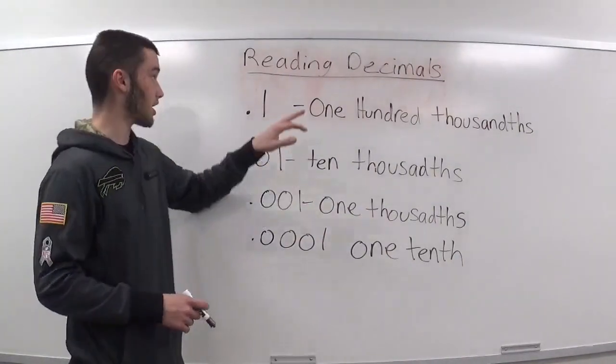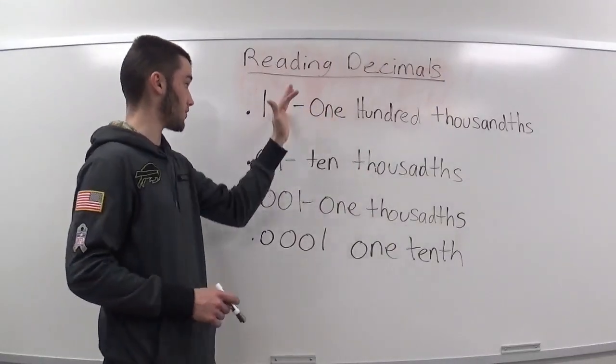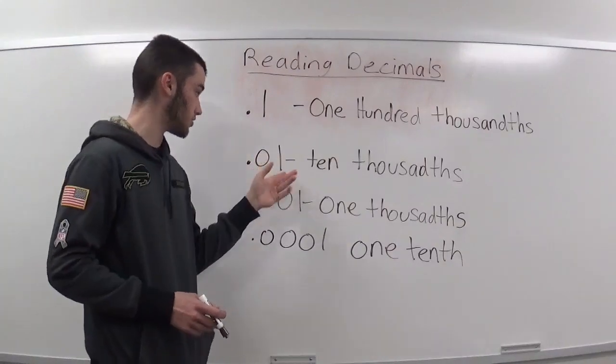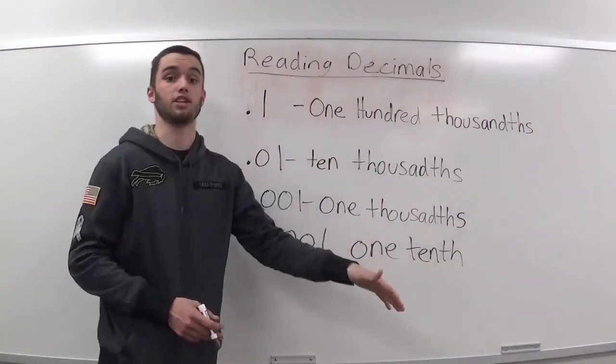Now something I forgot to say is I could put twenty zeros after this .1 and it's still one hundred thousandths of an inch. I could put thirty zeros after this .01 and it's still ten thousandths of an inch.